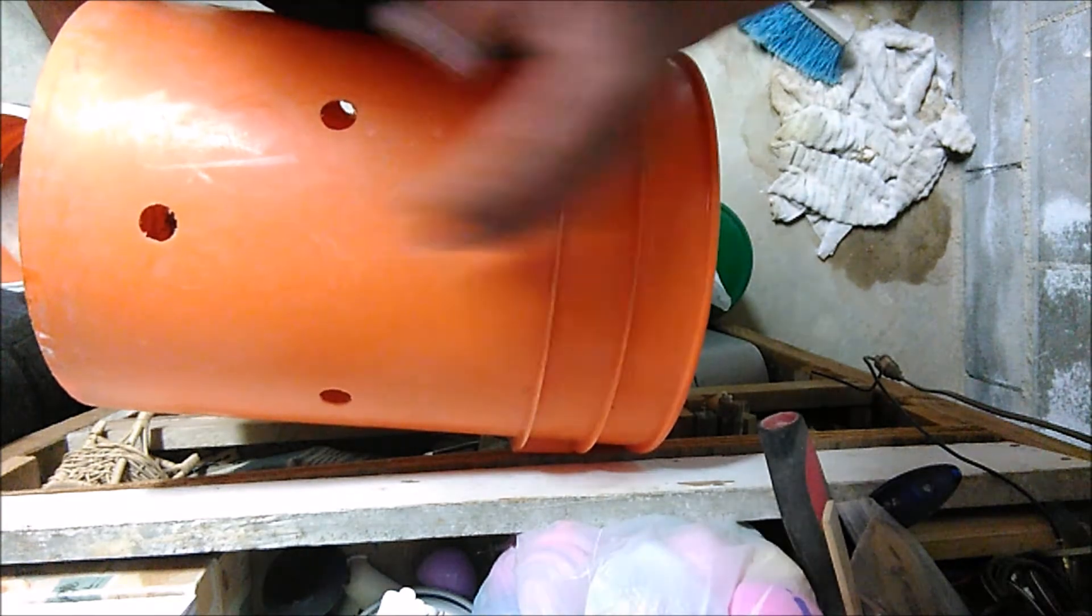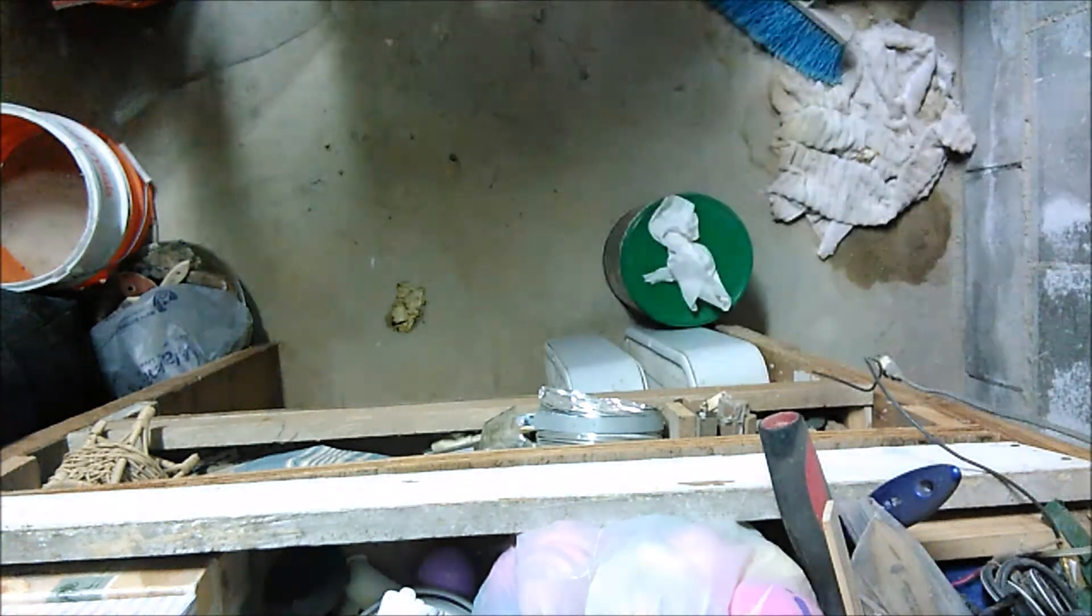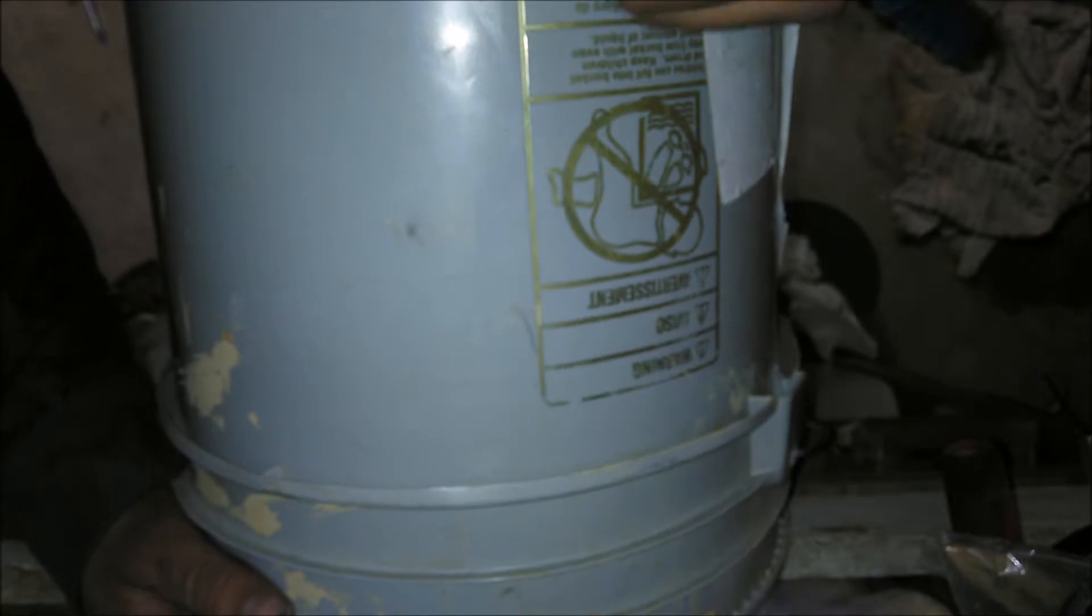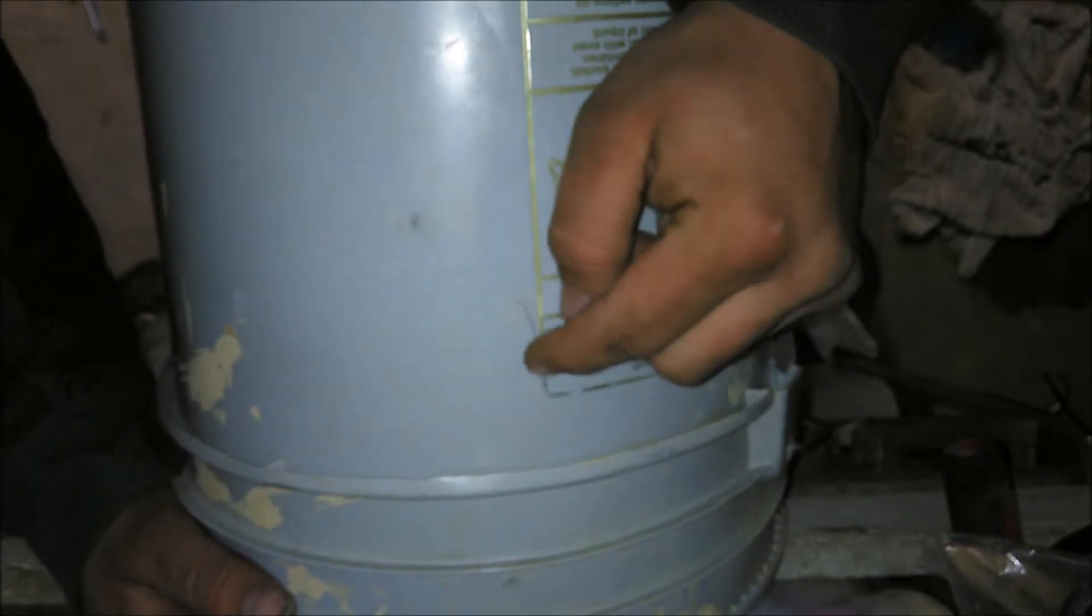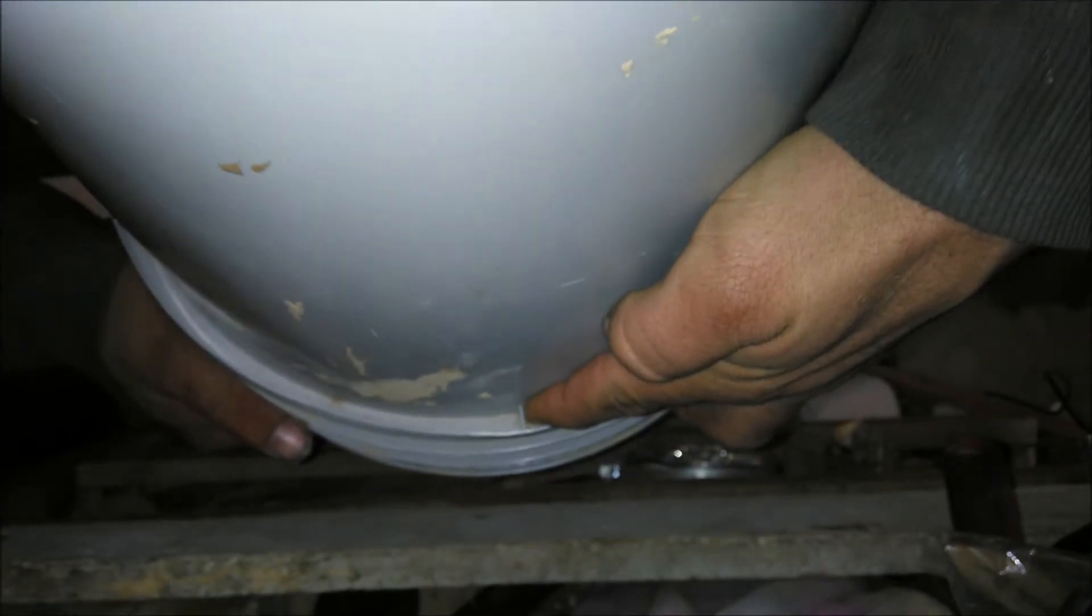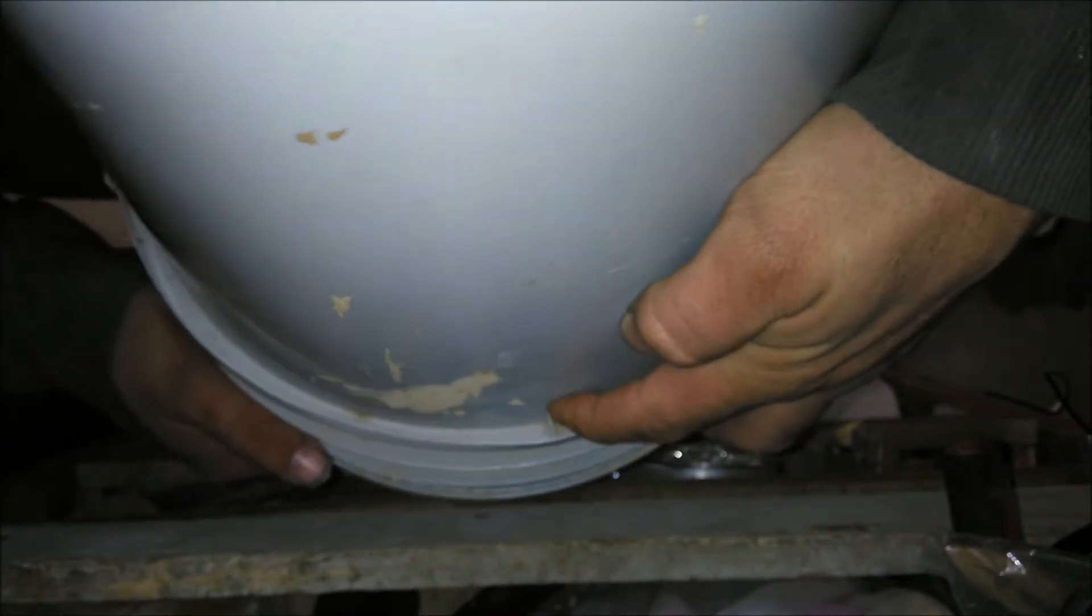On this bucket you want to make sure you have a lip here because this is gonna go down on your good bucket. You're gonna want to cut down about an inch, somewhere in here, that way you got some support. These tabs here you're gonna want to remove them with a box knife.